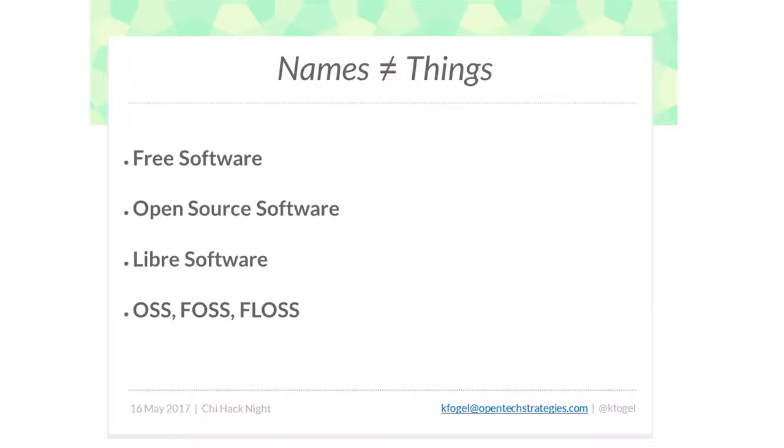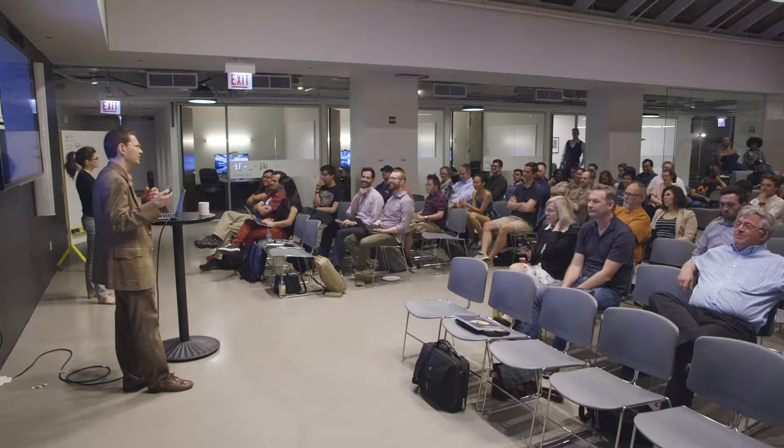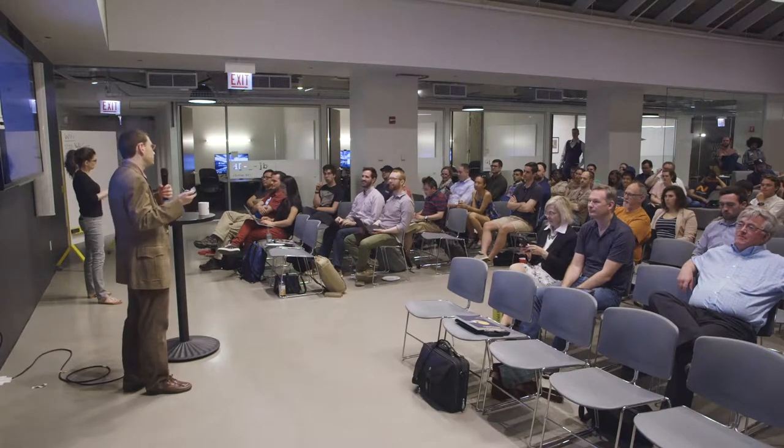I'm sorry to bust so many myths right at the beginning — this talk is about more interesting things — but there has been a lot of terminological confusion in the open source world. What we now call open source software, previously called free software, used to just be called software. Some people have decided to call it libre software, though it's not really an English word. When people use that, it means the same thing.